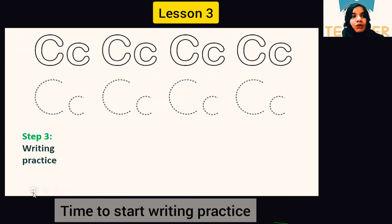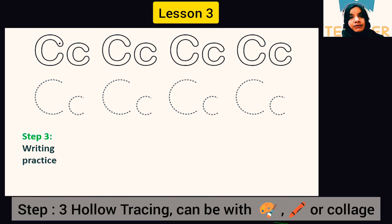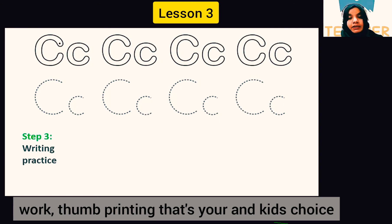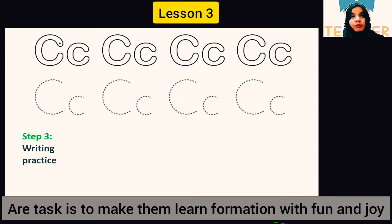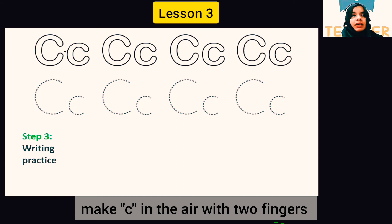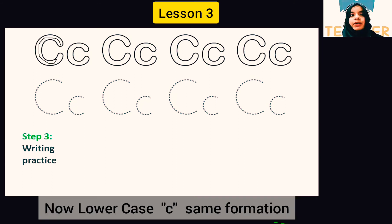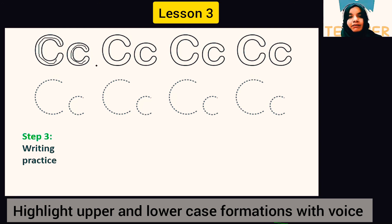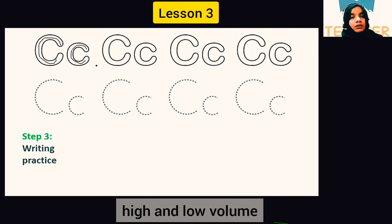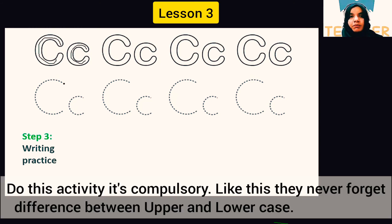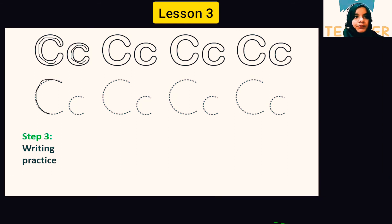Now it's time for writing practice. First, we do hollow tracing — you can use paints, crayons, thumb printing, or collage work. Then trace the letter C with two fingers, and trace it in the air. Make an uppercase C and then a lowercase c. Lower your voice for lowercase so children understand the difference between uppercase and lowercase through your voice tone.